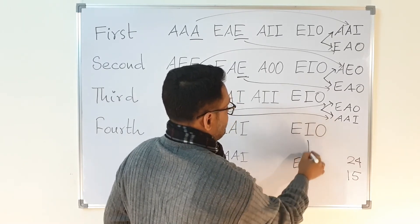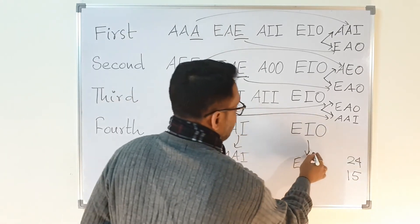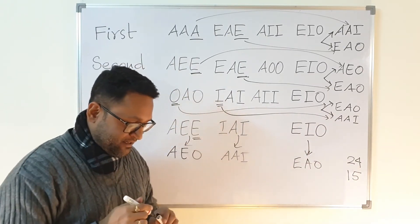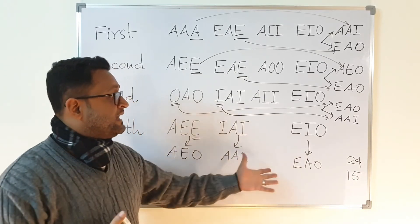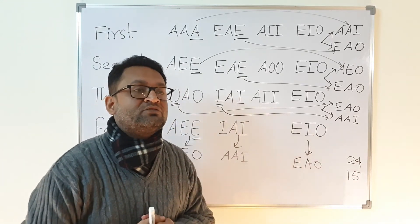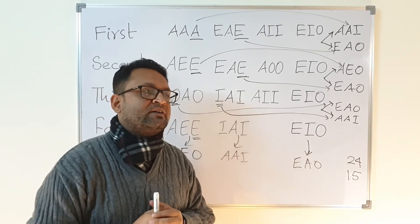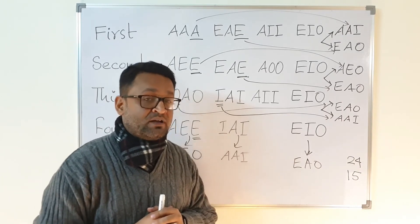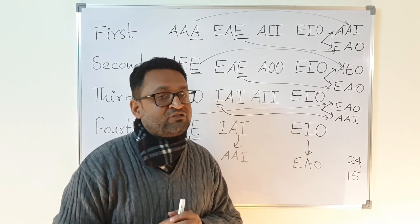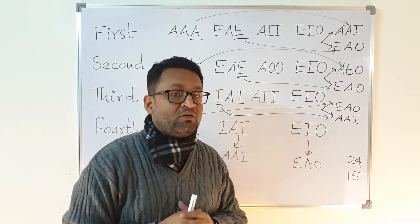So here we find AEO, here we find AAI, and here we find EAO. Given this analysis, you can actually find 24 valid syllogisms. This was a coffee question given to a class of Mechanical and Civil Engineering students when we were teaching logic last year. A student of Mechanical Engineering, Shashvat Tiwari, actually went on to solve this, and because of that I have to give him a very big treat — but thankfully COVID happened and I didn't have to give the treat yet.